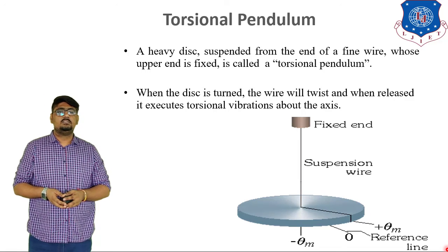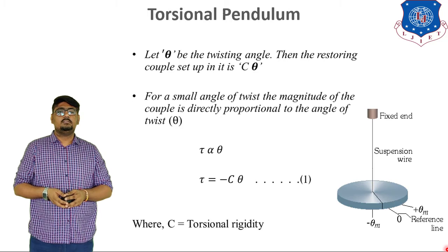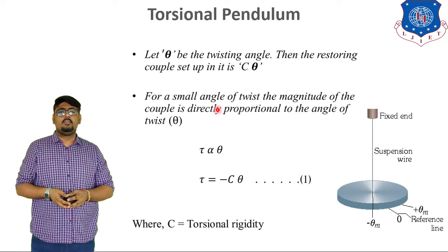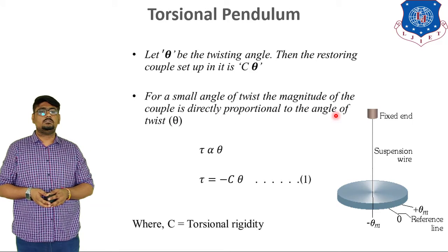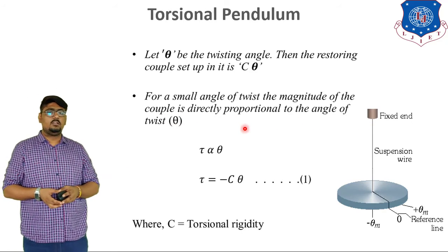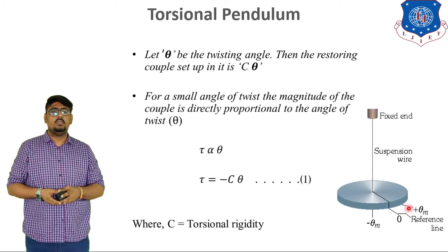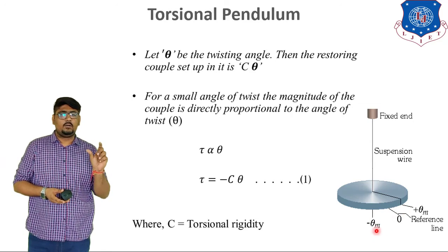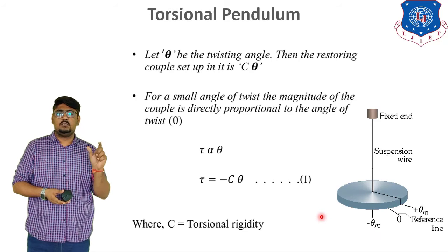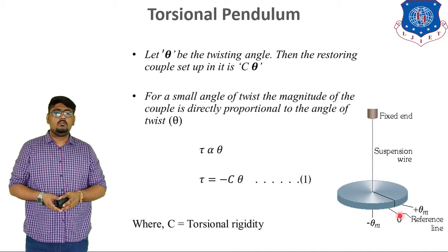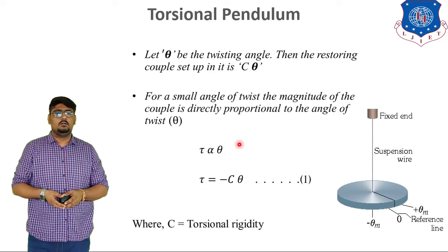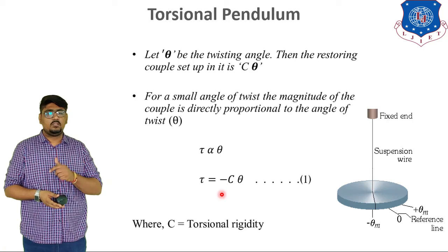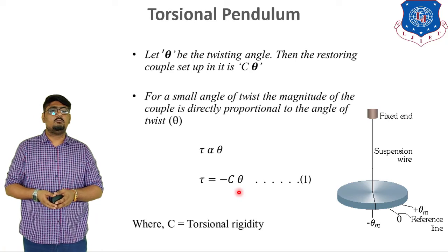If theta be the twisting angle, then the restoring couple setup is given as C theta. For a small change of the twist, the magnitude of the couple is directly proportional to the angle of the twist. Here you can see, in the figure shown, if the twist is given, you can see the animation. The twisting couple is set, and the disc is right now oscillating. So, the tau is proportional to the theta. Now, tau is equal to minus C theta because negative sign indicates the restoring forces. And over here, C is nothing but the torsional rigidity.